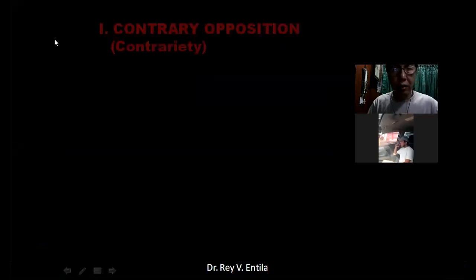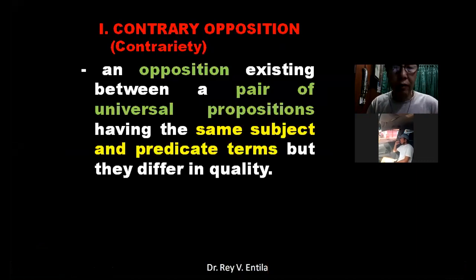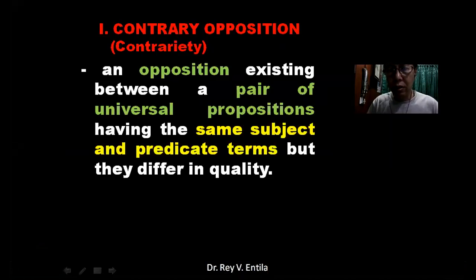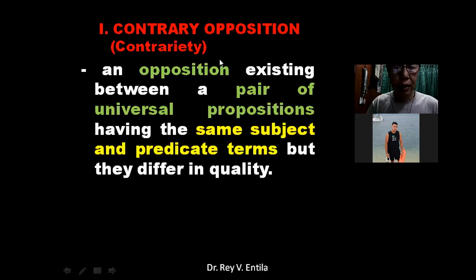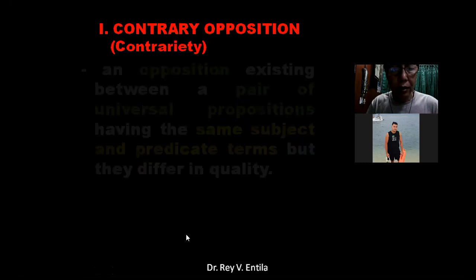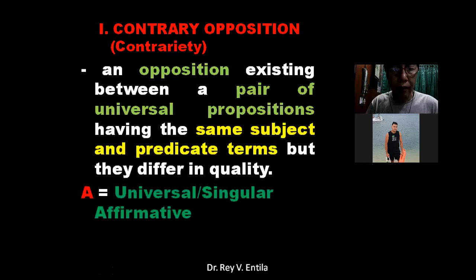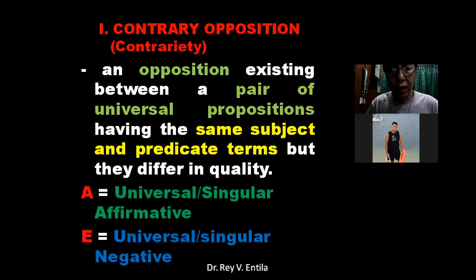As we go along, the more we will be clarified about the things we have just discussed. But that first slide is very, very important — it sets the whole motion of this discussion. So, contrary oppositions — what we call contrariety (that's the noun). This is an opposition existing between a pair of universal propositions having the same subject and predicate terms but differing in quality: universal affirmative versus universal negative.